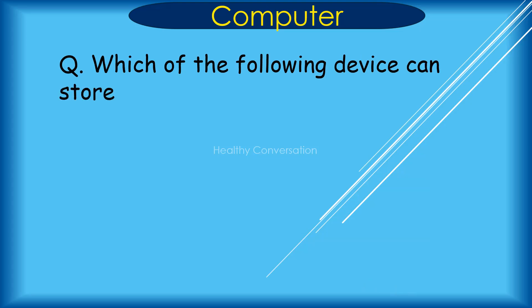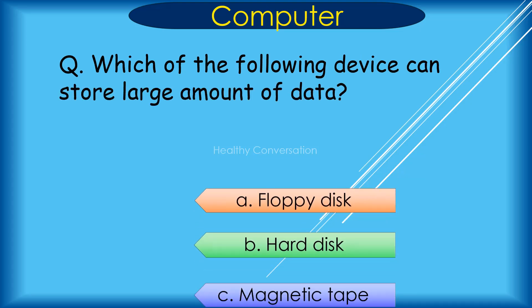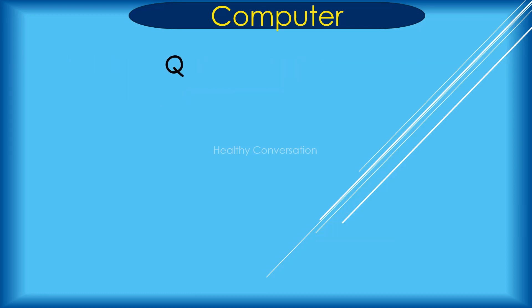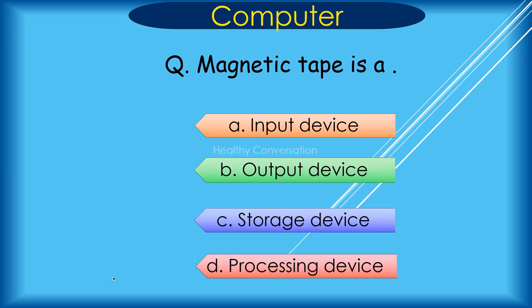Question: Which of the following devices can store a large amount of data? A. Floppy disk, B. Hard disk, C. Magnetic tape. Correct answer is C. Hard disk. A magnetic tape is a A. Input device, B. Output device, C. Storage device, D. Processing device. Correct answer is C. Storage device.